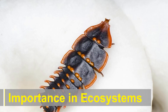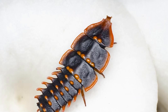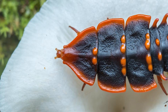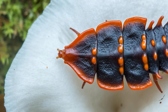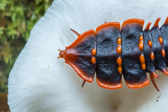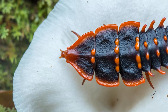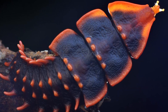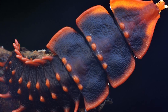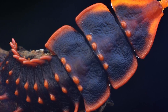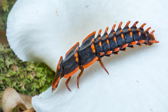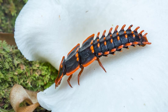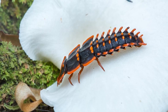Trilobite beetles play a crucial role in their ecosystems. As larvae, they help control populations of other invertebrates by preying on them. As adults, they assist in pollination, aiding in the reproduction of flowering plants. The trilobite beetle is a fascinating insect that captivates entomologists and nature enthusiasts alike due to its distinctive appearance and intriguing defense mechanisms. While they may not have direct interactions with humans, their role in the ecosystem emphasizes the importance of conserving these remarkable creatures and the habitats they inhabit.